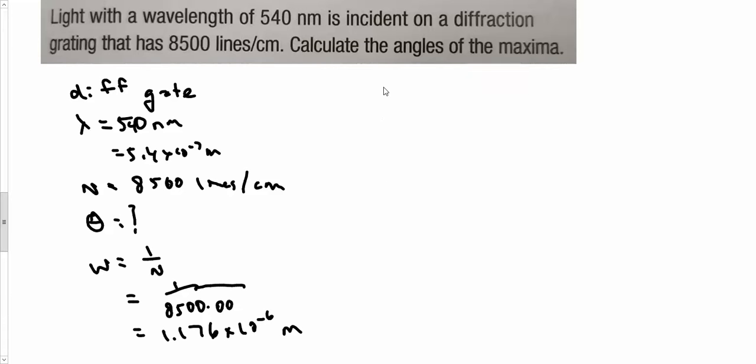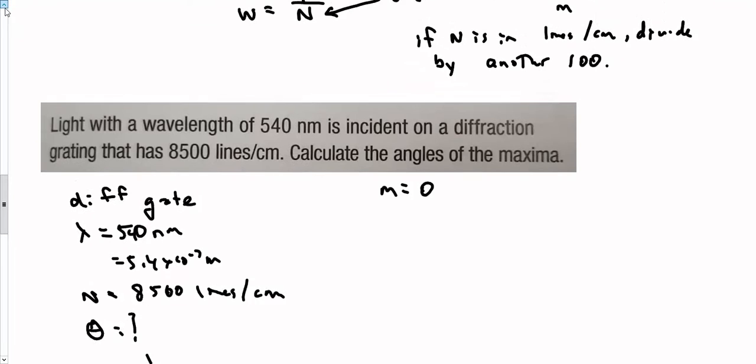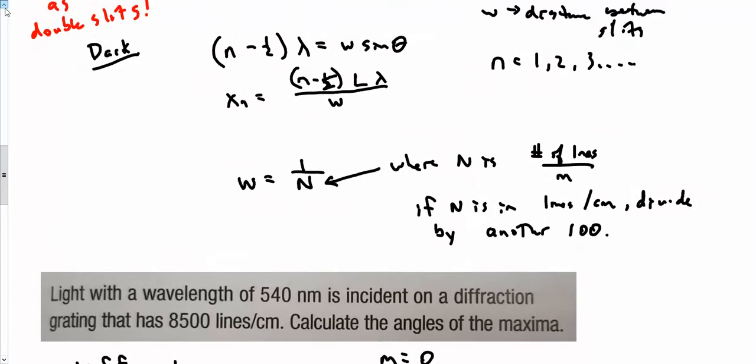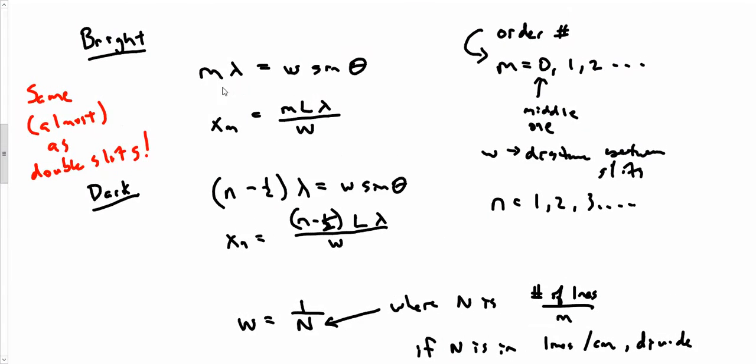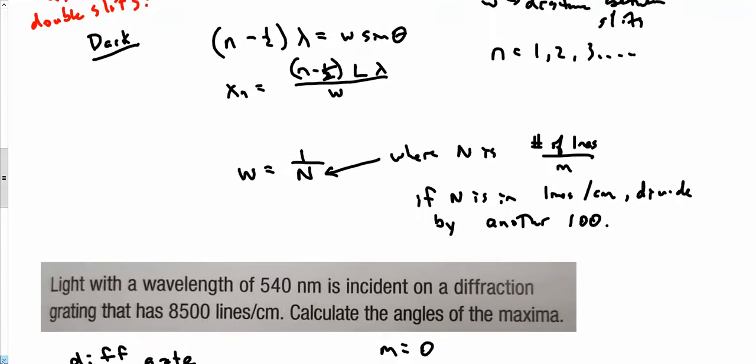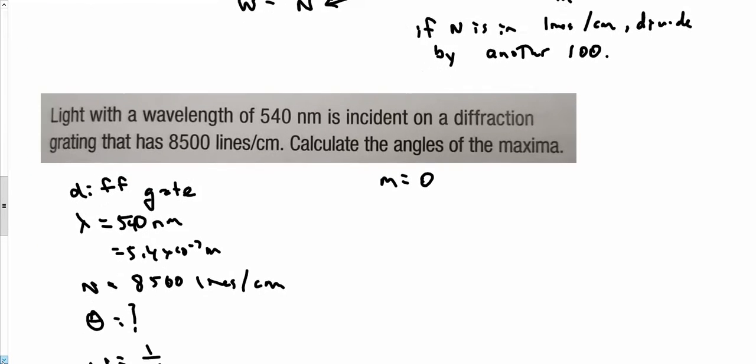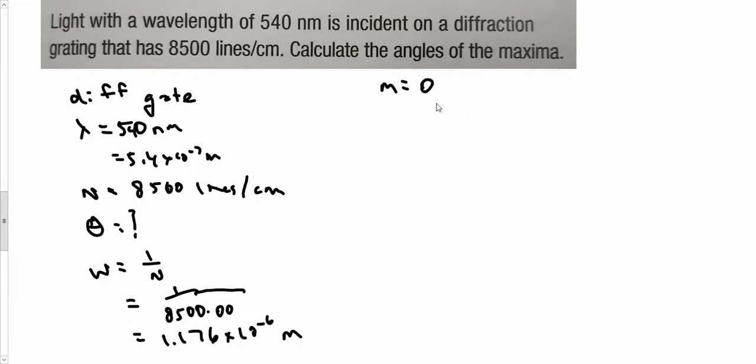That's how much space there is between the slits. So when m is 0, using the formula from up above, and I'll just scroll up to grab it, because we want the one with angles. So it's m lambda equals w sine theta. All righty, over here. m lambda equals w sine theta. So when m is 0, theta is going to be 0 degrees. Because it's straight across. It's the one straight across from the slits in the middle.